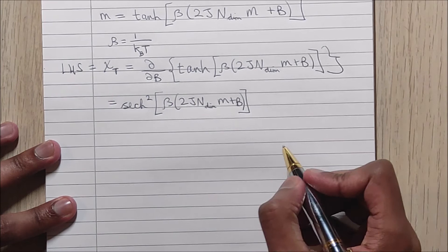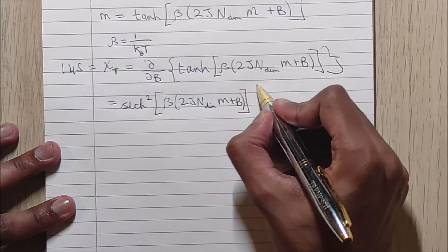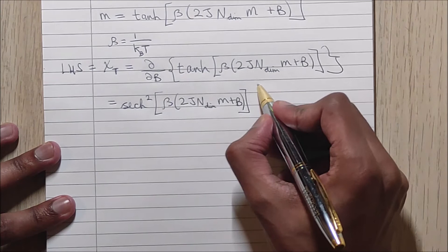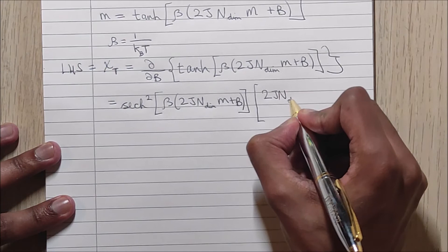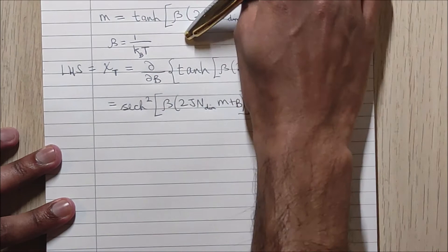And then we must also differentiate the argument of this function, which if I substitute in for beta, I will get the following. And remember that we are differentiating M here.